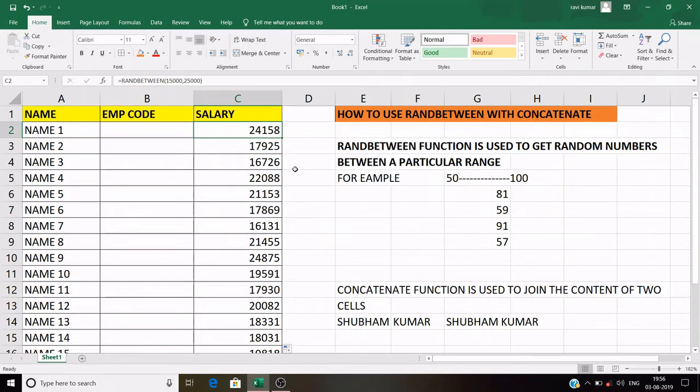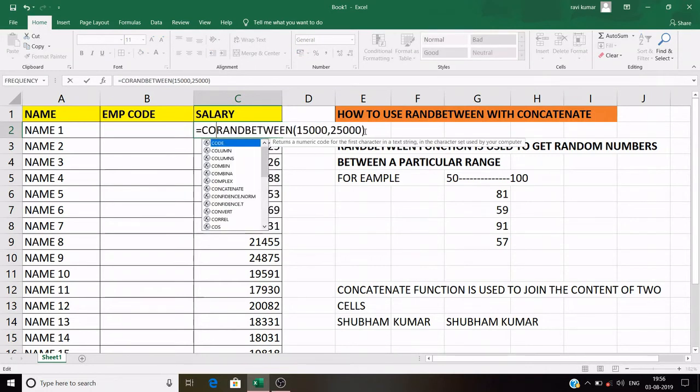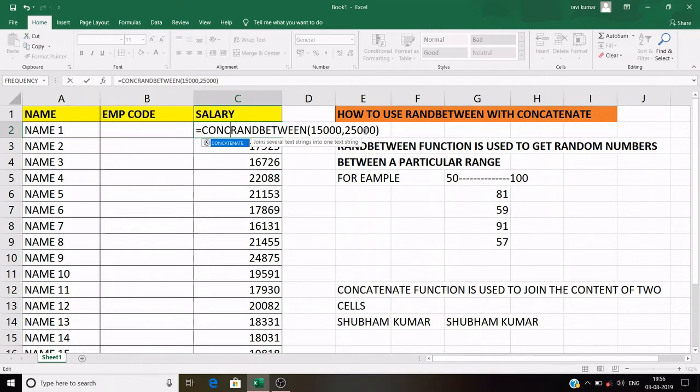So what can I do? I'll use CONCATENATE with RANDBETWEEN. How? Let's see. I'll write CONCATENATE in the prefix of RANDBETWEEN. I'll delete two zeros between 15,000 and 20,000. Why? Because I'll put two zeros extra with the CONCATENATE function. Now these two zeros will use CONCATENATE and merge with RANDBETWEEN function.